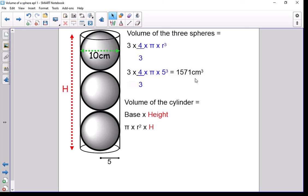it'd be three lots of 10 as our height, so we've got a height of 30 centimeters. The whole volume of the cylinder would be the base, which is π times 5² times 30, which gives us a volume of 2356 centimeters cubed.